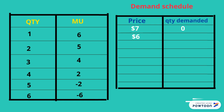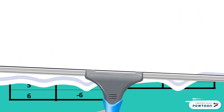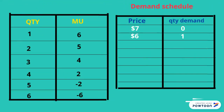When the price drops to $6, we are looking at MU of 6 or more, and MU of 6 is given by unit 1. Therefore, at $6, we will be buying 1 unit. When the price drops to $5, we are looking at MU of 5 because price has to be equal to MU. Therefore, the quantity demanded will be 2.